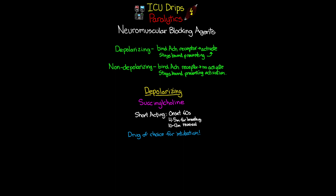When you give succinylcholine, you might see some fasciculation of their skeletal muscle, coming from that initial activation when it binds to those receptors. Usually it's just some twitching, very momentarily. Succs isn't the only paralytic we use for intubation, and we'll get to those other medications in a minute. One side effect to be aware of is that we can see an increase in our patient's serum potassium. This is a result of that systemic muscle contraction from that initial activation of those acetylcholine receptor sites, leading to potassium leaving the cells and leaking into the vasculature.